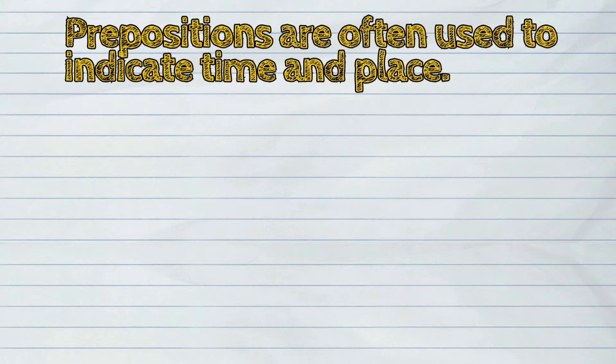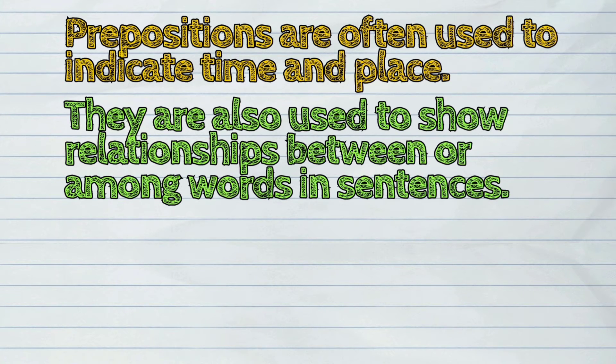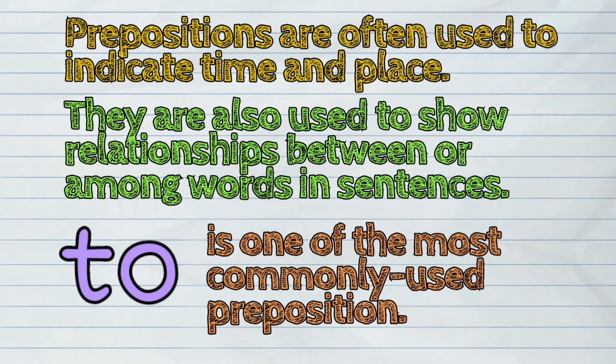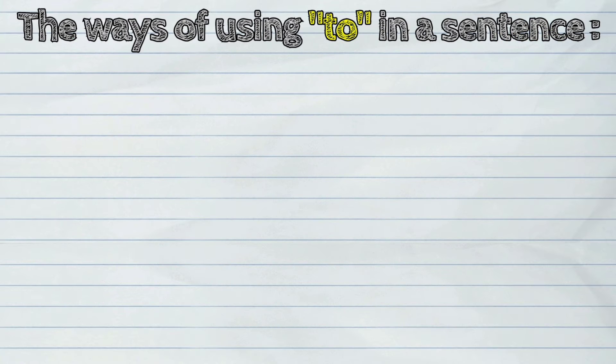Prepositions are often used to indicate time and place. They are also used to show relationships between or among words in sentences. 'To' is one of the most commonly used prepositions. The following are the ways of using 'to' in a sentence.